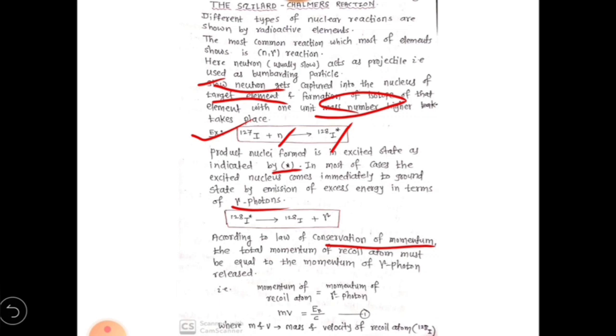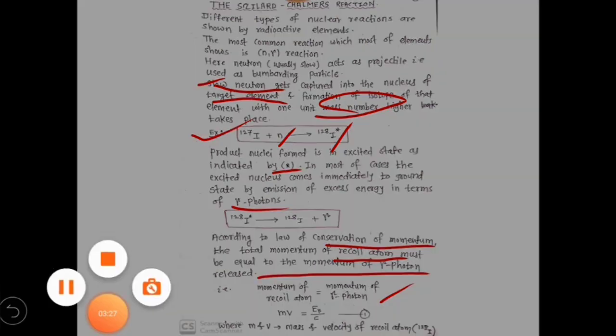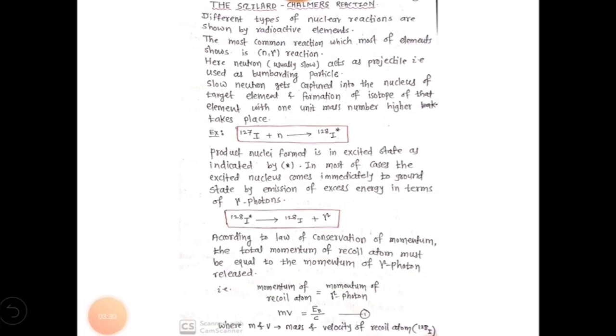There are two momentums: the momentum of recoil atom which is formed (that is iodine-128) and the gamma radiation which is ejected. According to law of conservation of momentum, the momentum of this recoil atom must be equal to momentum of photon—that is, gamma photon which is released. Therefore, we can write: momentum of recoil atom is equal to momentum of gamma photon.